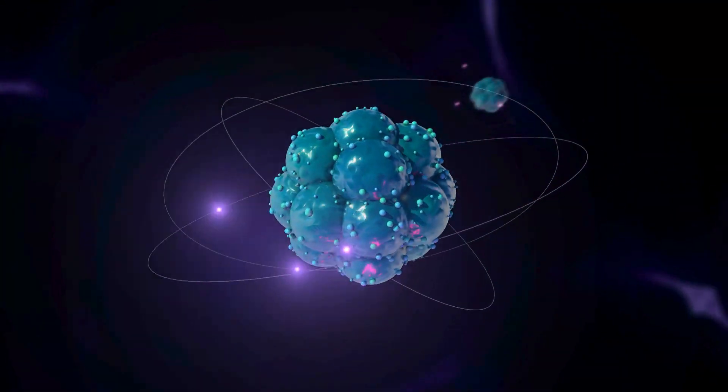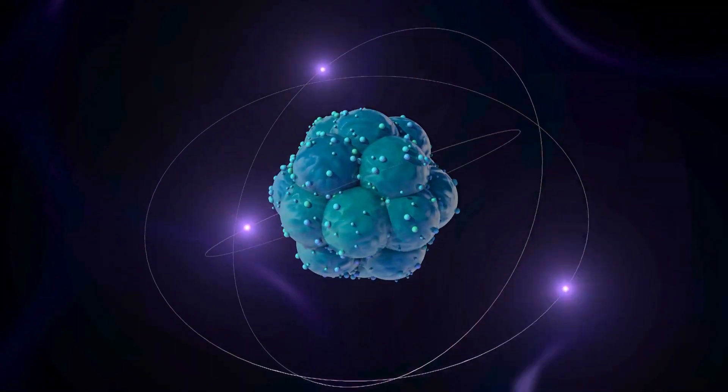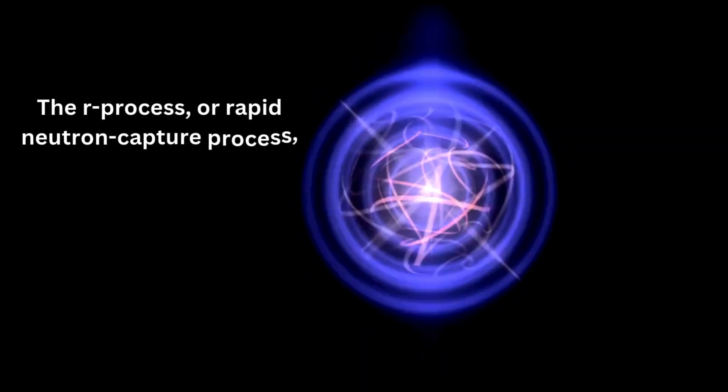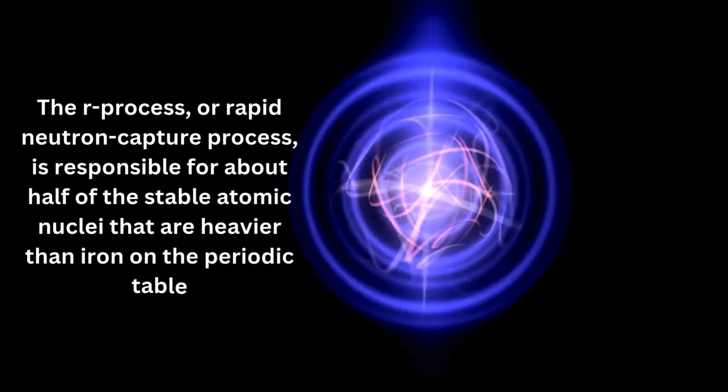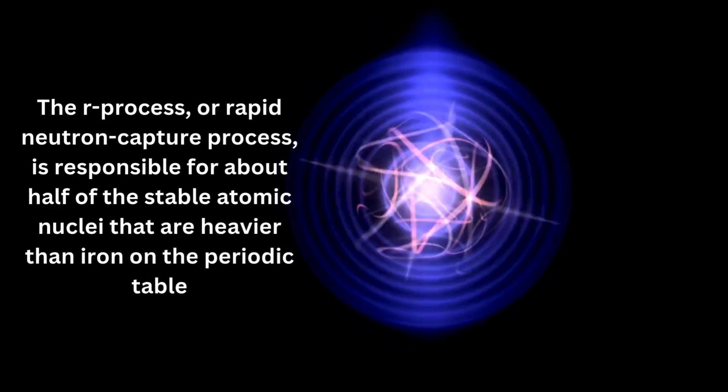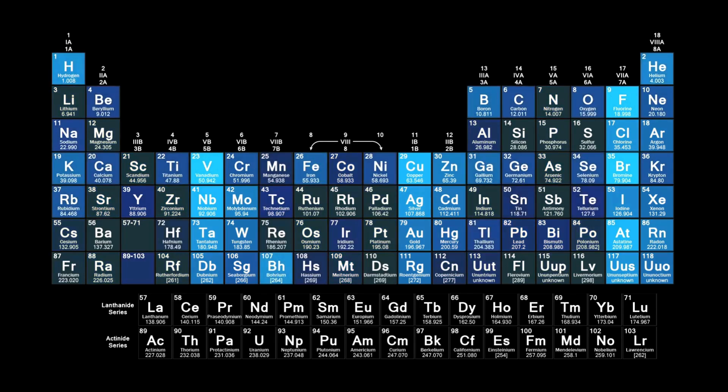This is where elements heavier than iron, such as gold and silver, are formed. The R process, or rapid neutron capture process, is responsible for about half of the stable atomic nuclei that are heavier than iron on the periodic table.